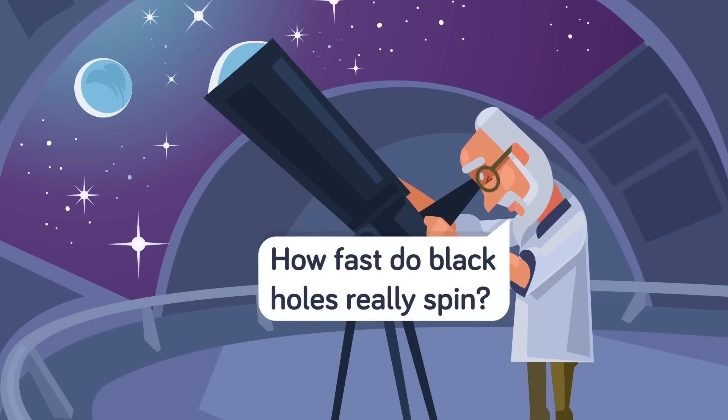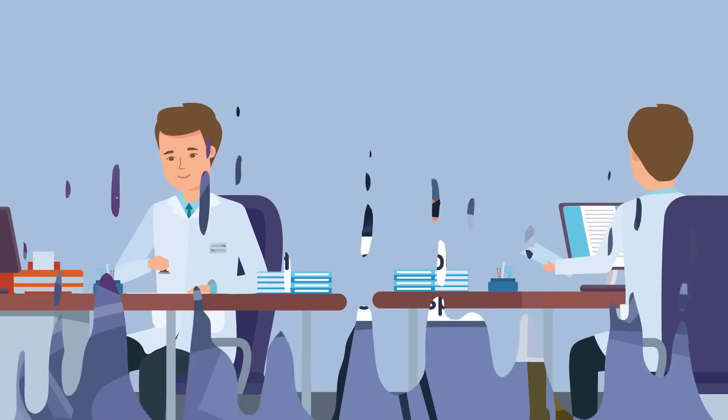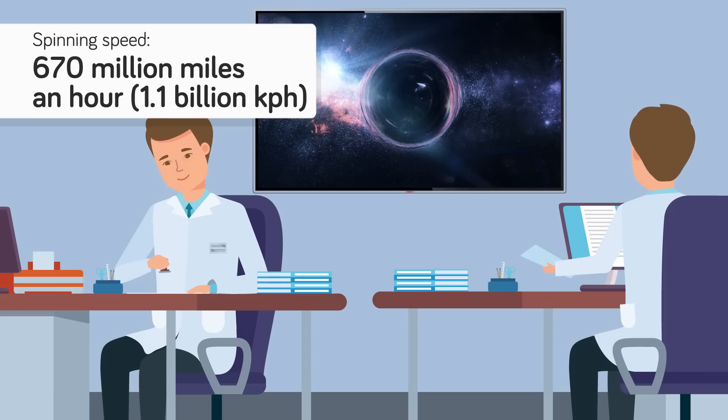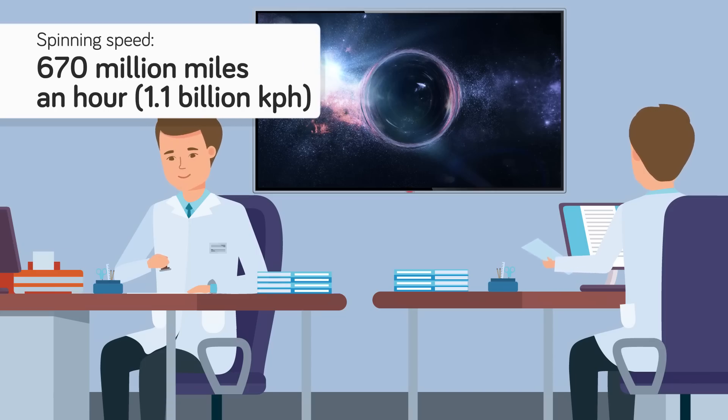The answer turned out to be really, really fast. Measuring the spin of five different supermassive black holes, all safely located around 10 to 11 billion light years away from the Earth, scientists discovered that the event horizon on one of these giants was spinning at just shy of the speed of light, 670 million miles an hour.